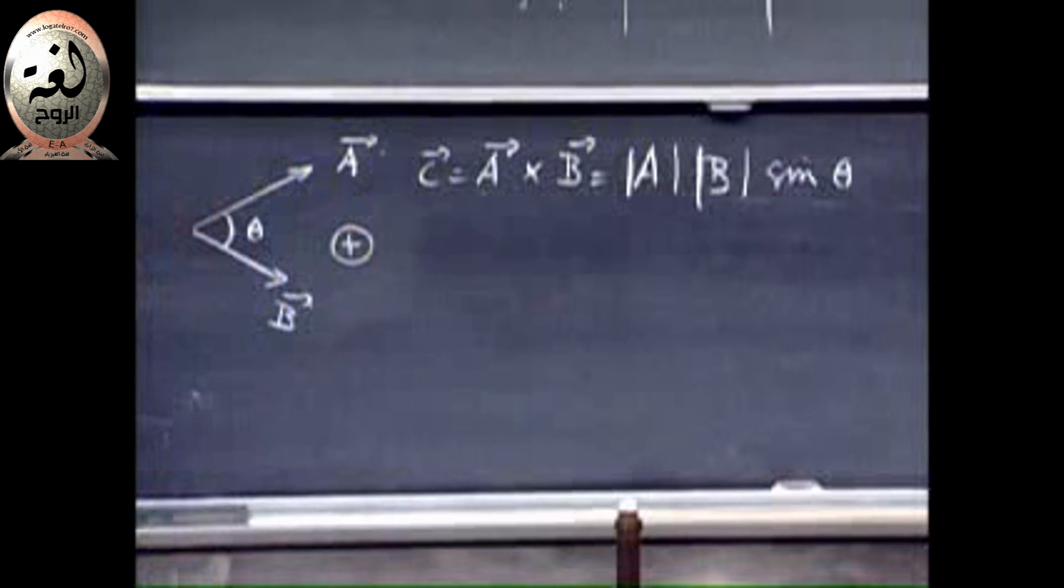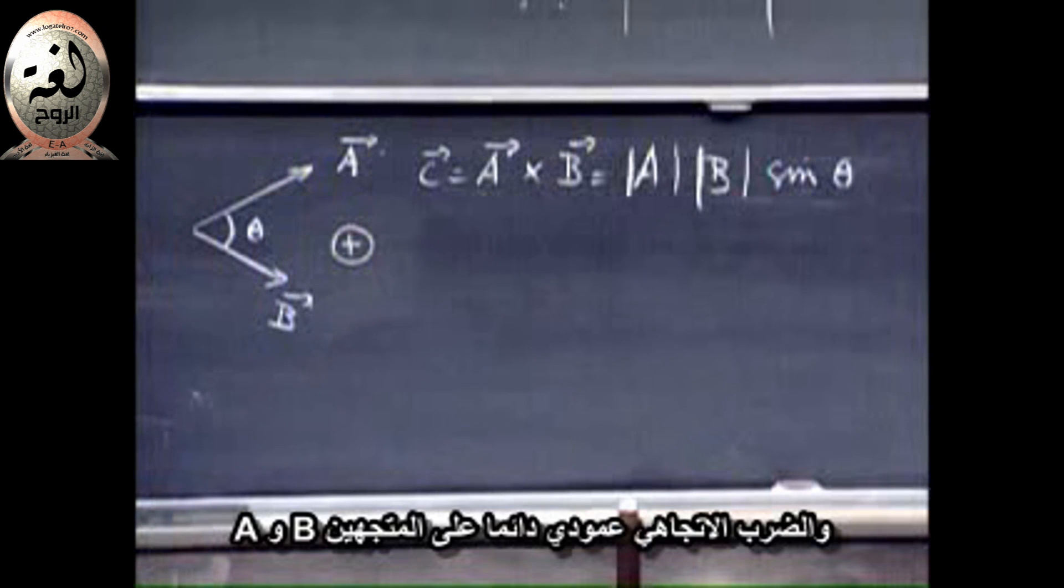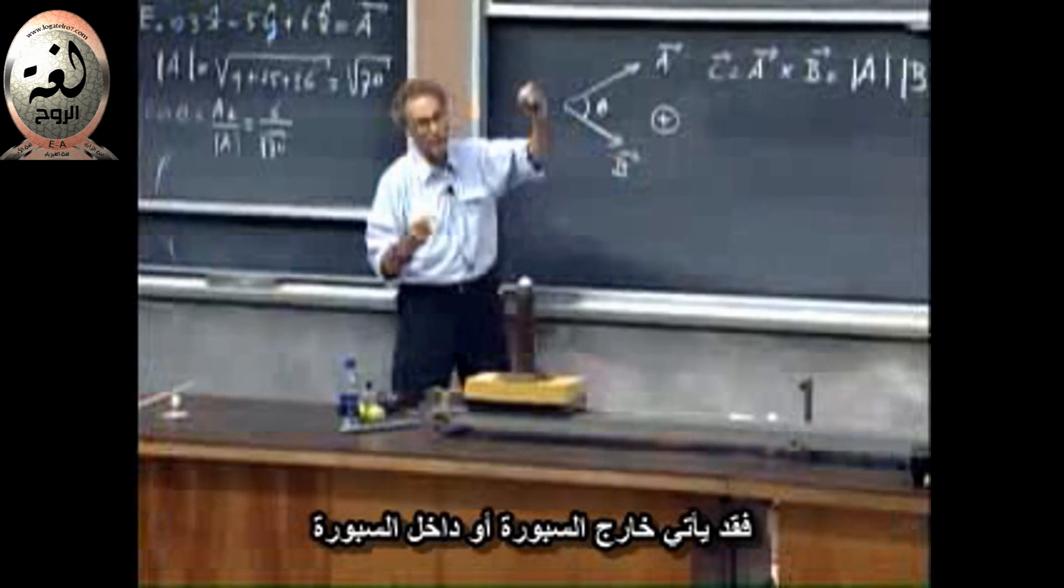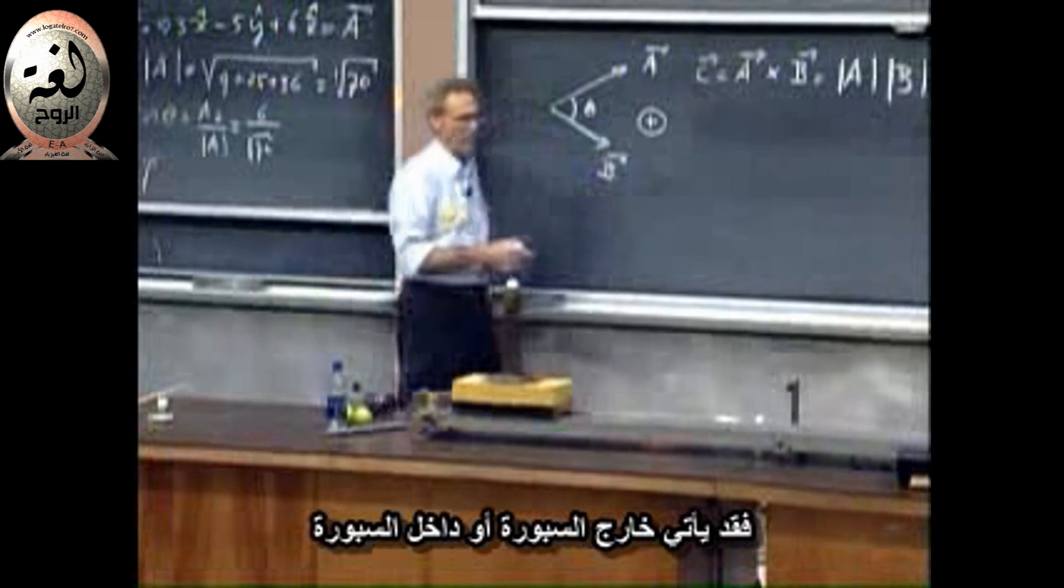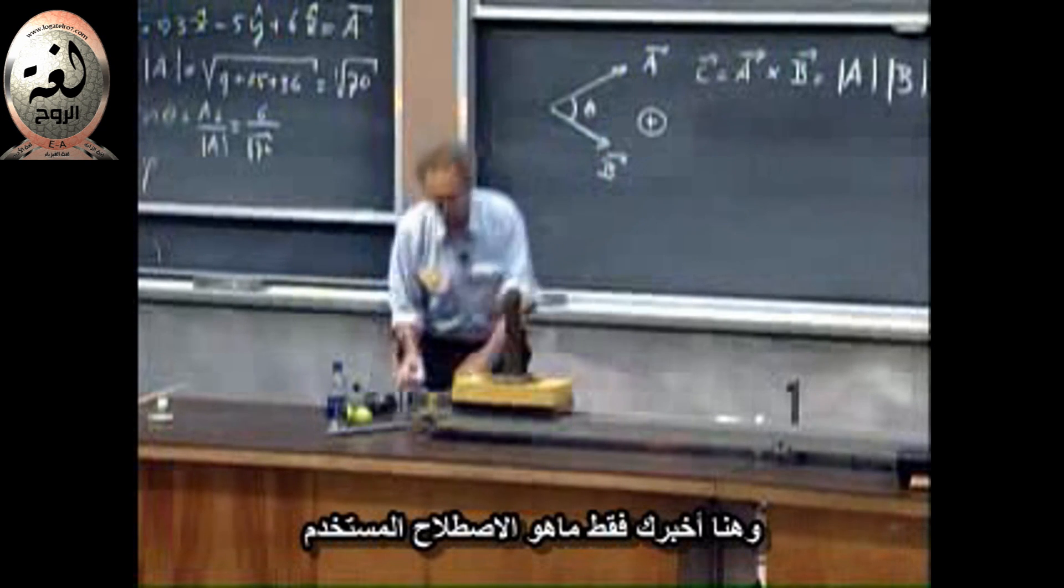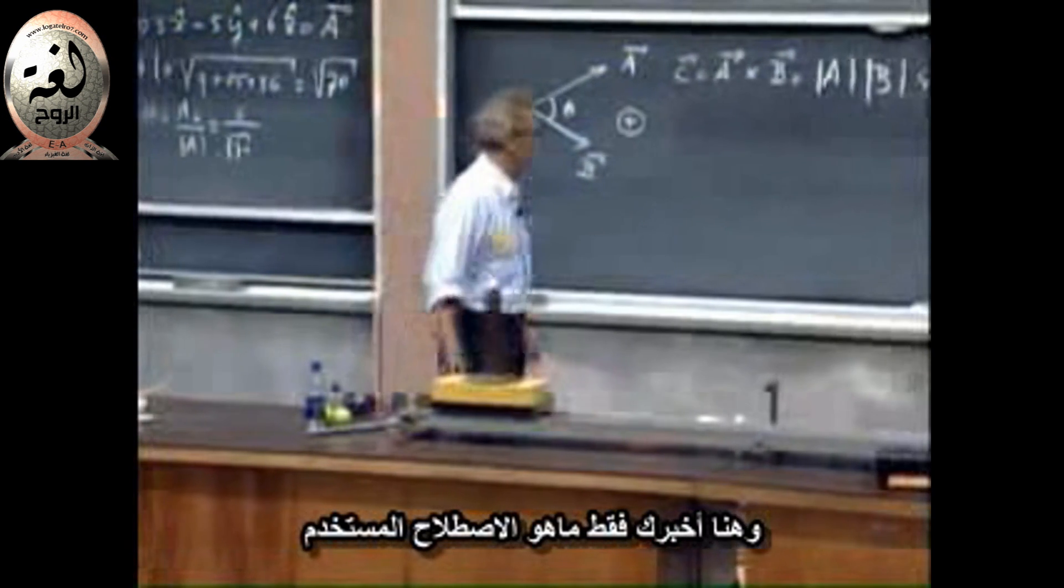A cross product is always perpendicular to both A and B, but it leaves you with two choices. It can either come out of the blackboard, or it can go in the blackboard. And I just told you which convention to use.